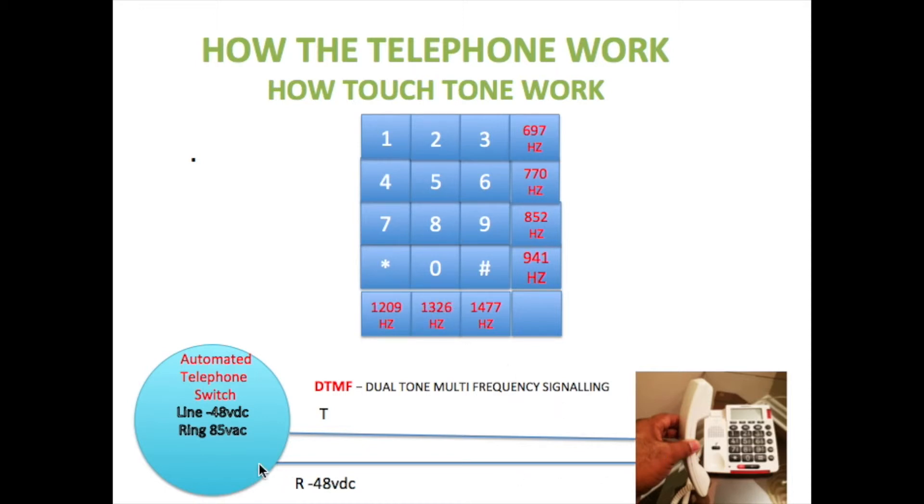These two frequencies are sent back to the switch. The switch is also programmed to recognize DTMF frequencies. So the switch would know that the two frequencies 770 Hertz and 1326 Hertz represent the number five. So the switch would store the number five in its memory awaiting for the next number to be dialed.